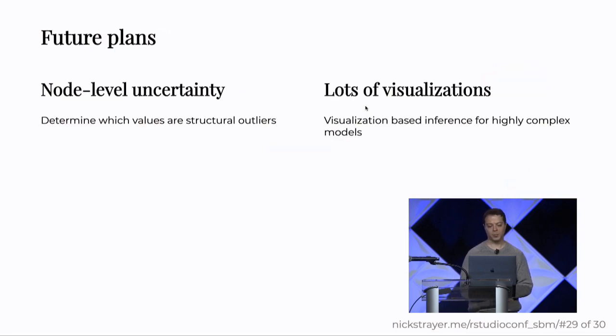So I have very little time left, but the future plans, we're going to focus a little bit more on node level uncertainty to allow us to try to find outlier nodes, values that don't really fit the generating distribution that we've inferred. And we're also going to just put a lot more visualizations. I've been working on this product for a long time, and I have lots of visualization ideas, and I want to start pumping them out now that we've got the fundamental kernel going.